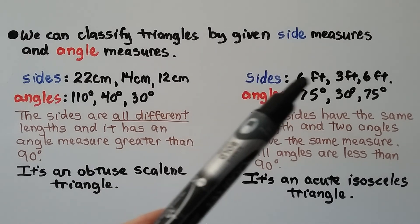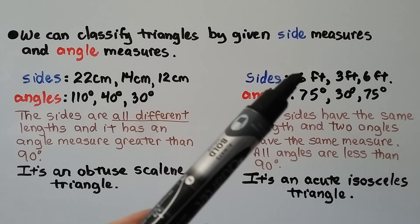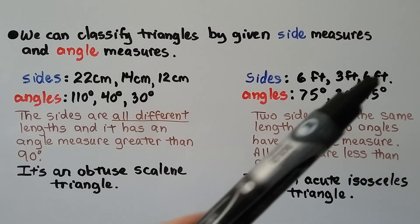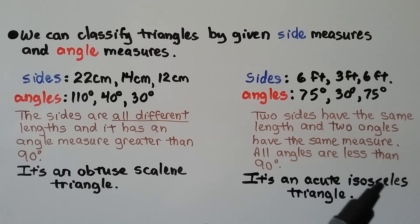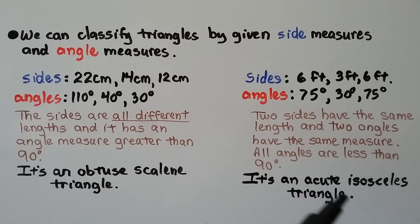Here's another triangle. It has sides of 6 feet, 3 feet, and 6 feet, and angles of 75 degrees, 30 degrees, and 75 degrees. Two sides have the same length and two angles have the same measure, and all the angles are less than 90 degrees. It's an acute isosceles triangle — two sides the same and two angles the same makes it isosceles, and because all measures are less than 90 degrees, it's acute.